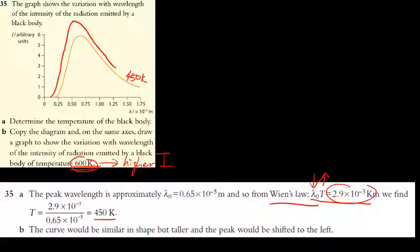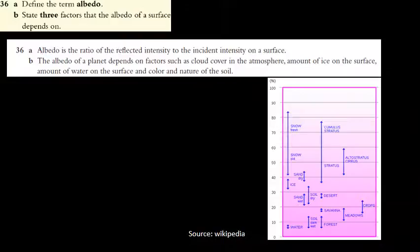The correct drawing for the 600 K curve must be above the original at all wavelengths, with its peak shifted to a shorter wavelength. Both a smaller peak wavelength and a higher intensity at all points are required.